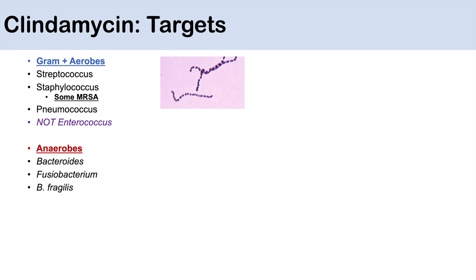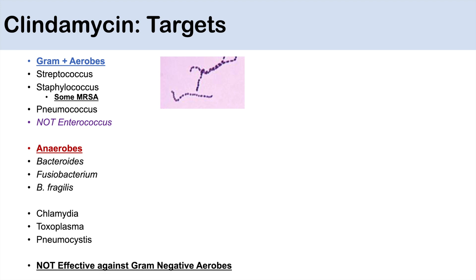These anaerobes can be involved in oral infections. Clindamycin can also be useful for other types of infections like chlamydia, toxoplasma, and pneumocystis. An important point is that clindamycin is not effective against gram-negative aerobes, so its use is generally focused on anaerobes and anaerobic coverage.